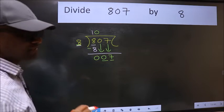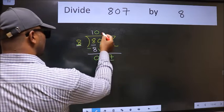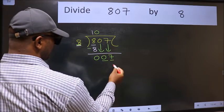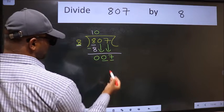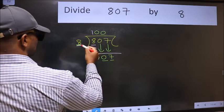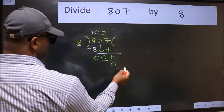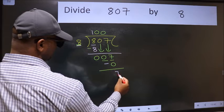Instead of that, what you should think of doing is, which number should we take here. If I take 1, we will get 8. But 8 is larger than 7. So what we should do is, we should take 0. So 8 into 0, 0. Now we should subtract. We get 7.